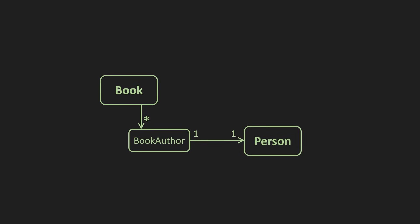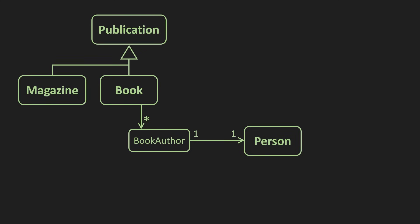If the domain expert calls it a book, then we, programmers, call it a book. There could be magazines later, and then 'publication' could be an abstraction combining both into one term. Everything we knew from object-oriented design is still valid. But then the problems come.